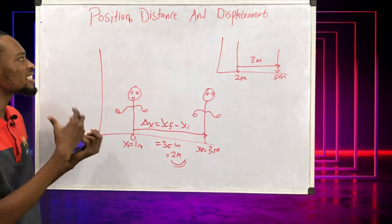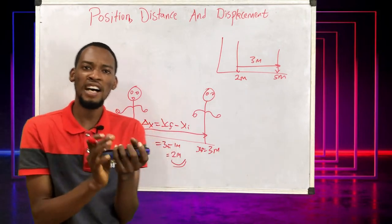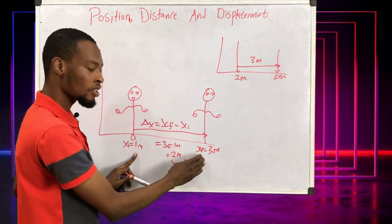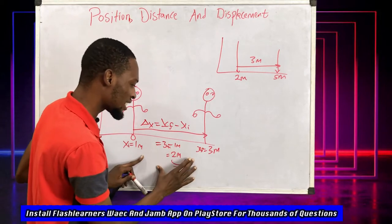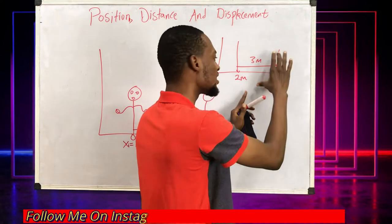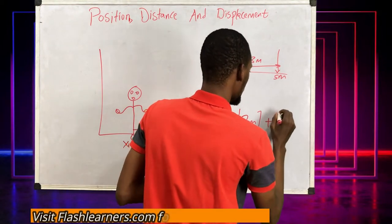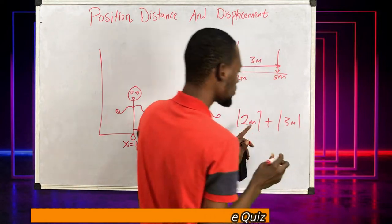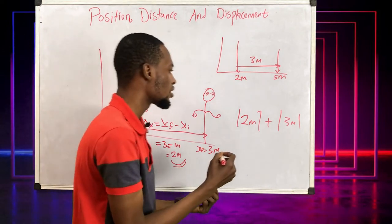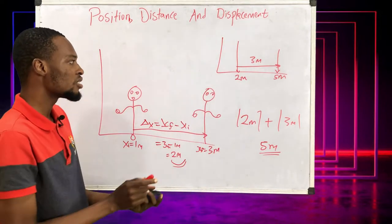Now you may be wondering: what is distance? Distance is simply the total ground covered by an object. From here to here I covered two meters, then I moved and covered another three meters. The total distance is the sum of the absolute values: two meters plus three meters equals five meters.